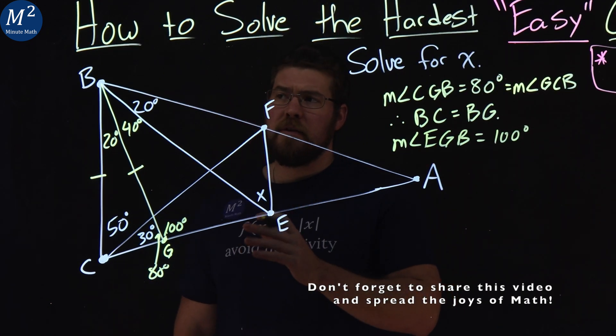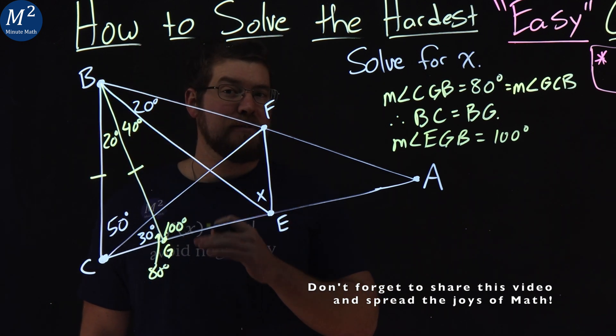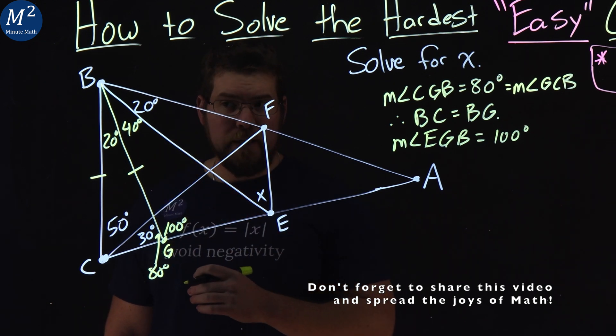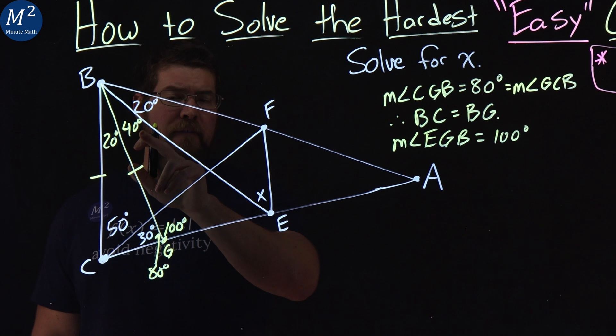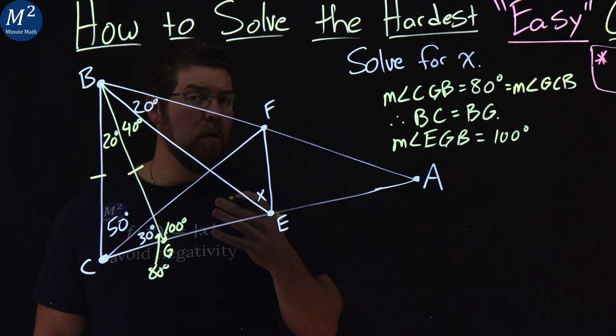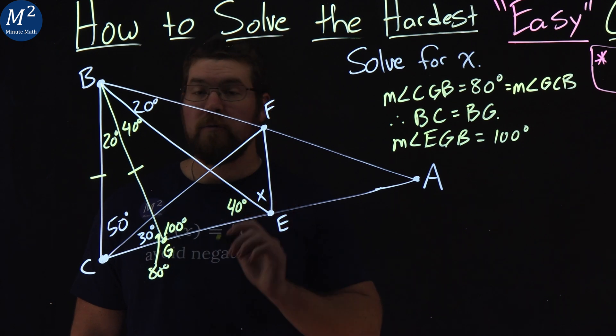Again, we now look at this triangle, triangle BGE. We know all triangles have to add up to be 180 degrees. Well, if we have 100 degrees here, and then 40 here, we subtract both of them from 180, we get another 40 degrees right here. And so the measurement here of angle GEB is equal to 40 degrees.